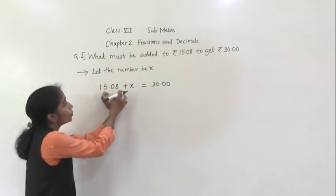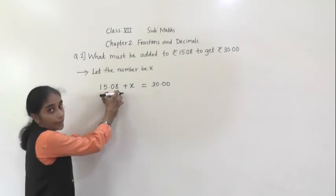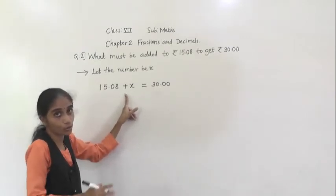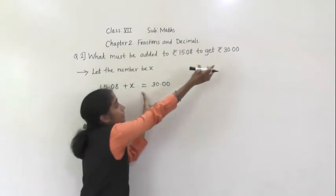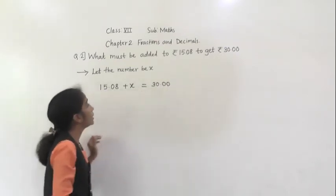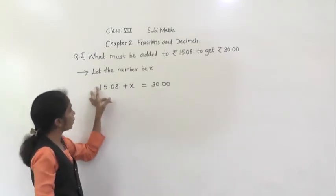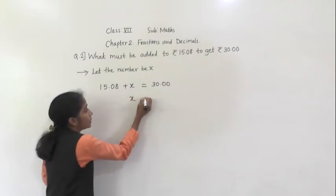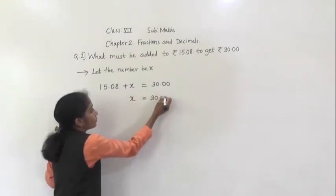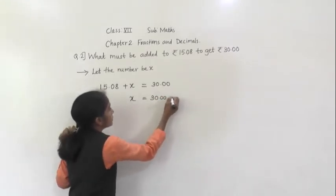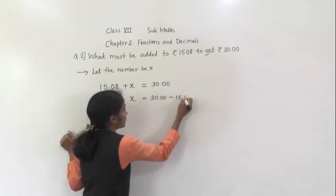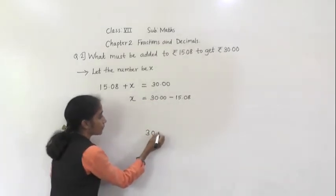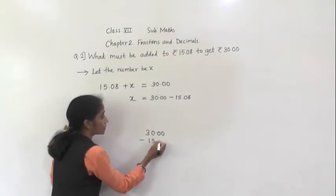What must be added to rupees 15.08 to get rupees 30? We add X — the number which we don't know. To get rupees 30. Now here we use the transversal rules. This number is positive side — it is plus. If it transfers to that side it will become minus. So it is equal to 30 minus 30.00 minus 15.08.